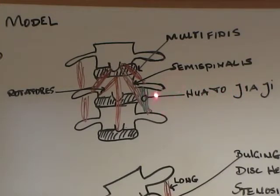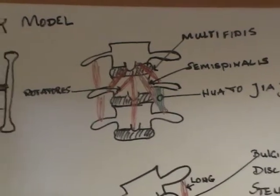and the huato jiaji points really are, in my estimate, where all of these muscles tend to cross or bisect, so that when you needle this, you have the same effect as though you would needle the shortened muscle that we just talked about over here.